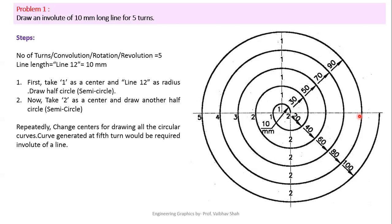Now change the center once again to point 1. Take the radius from point 1 to the current end point and draw one more arc, which ends at point number 5 — you have traveled through 180 degrees. Then change the center to point 2, take radius 2 to 5, and draw the final semicircle. This completes 360 degrees and our fifth turn is now complete.